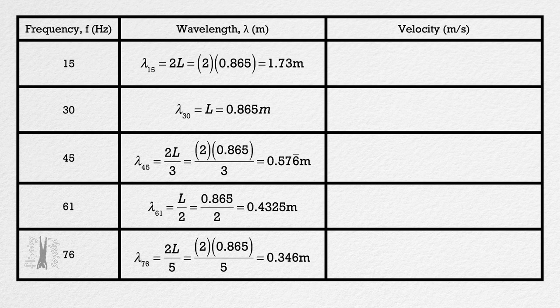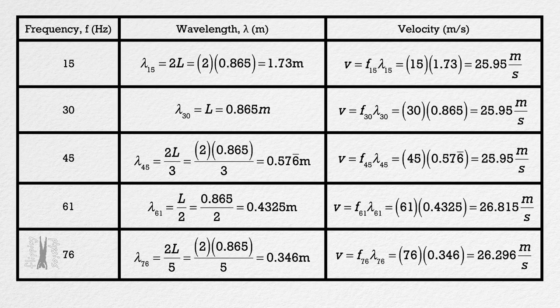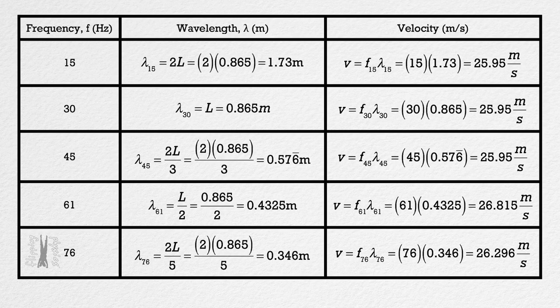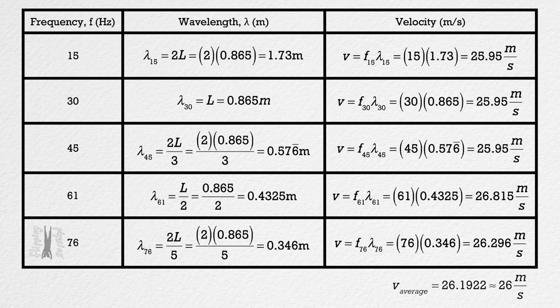Actually, you know what, Bobby already gave us the equation for the speed of a wave, it equals frequency times wavelength. So calculating the speed of the wave at each frequency is also quite straightforward. We simply multiply the frequency times the wavelength. So I'm also not going to walk through those calculations. We can then determine the average speed for all five of these frequencies to be 26.1922 or 26 meters per second with two significant digits.